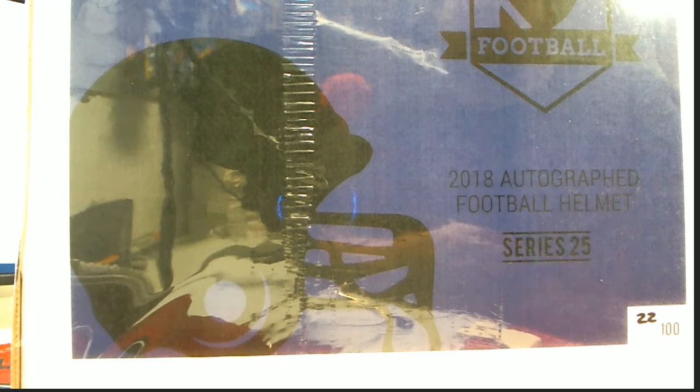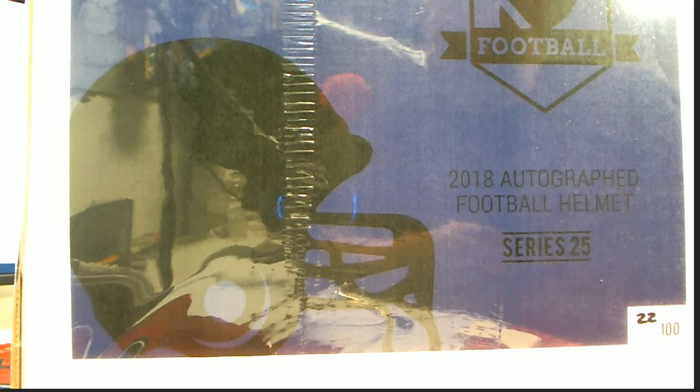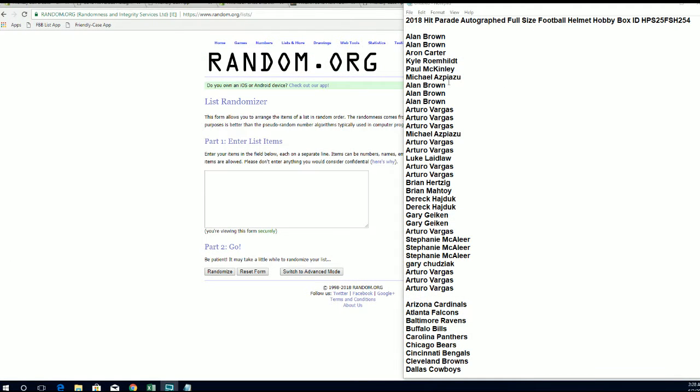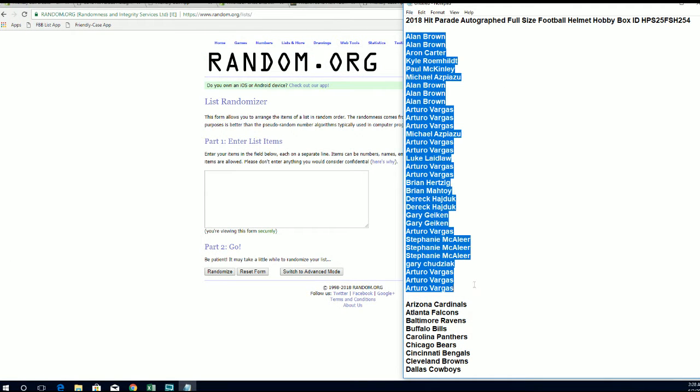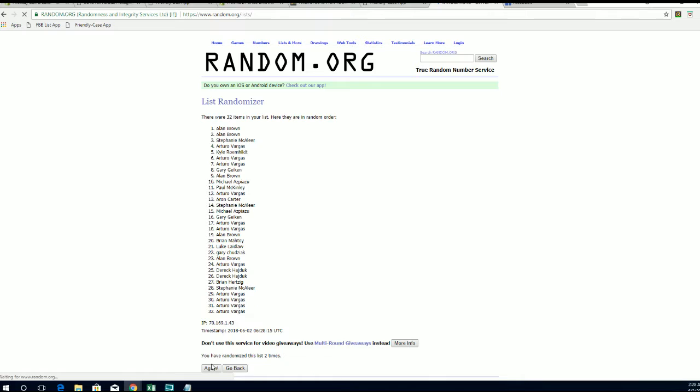Let's go, 2018 Hit Parade autographed full-size helmet. This is number 254, Hit Parade series 25. All right, Allen B to AV, let's copy and paste it. 32 roll names and team seven times each. Good luck, gents. There's one, two, three, razzle dazzle it, four, there it is, five, six, and seven.